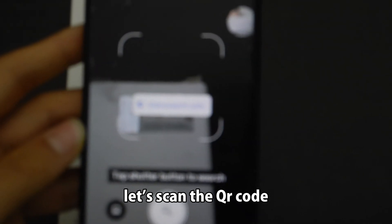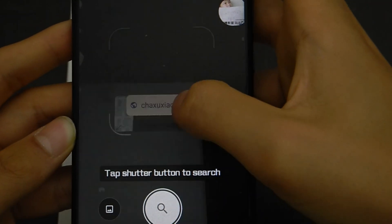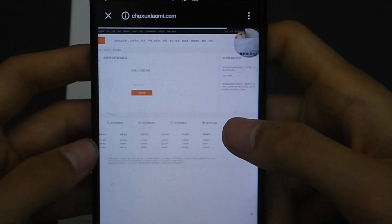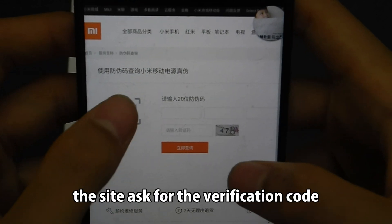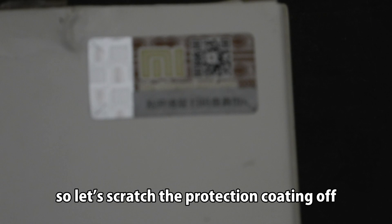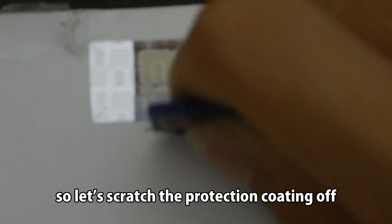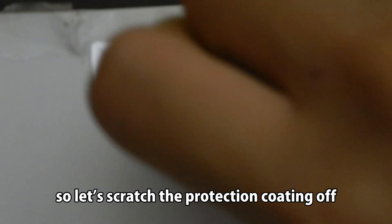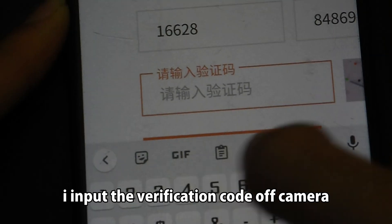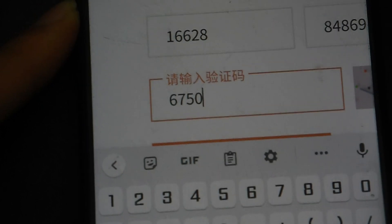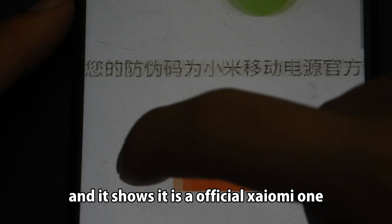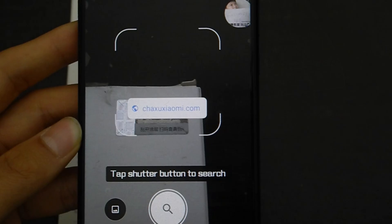Let's scan the QR code. The site asks for the verification code. So let's scratch the protection coding off. Camera doesn't focus again. I input the verification code off camera. It also has a captcha. And it shows it is an official Xiaomi one. And it's the first time the code being searched.